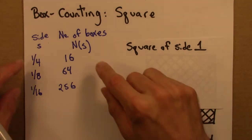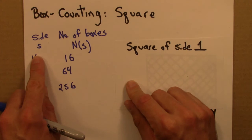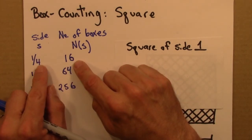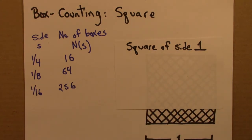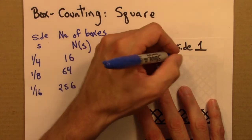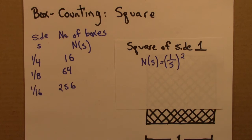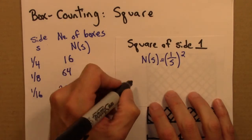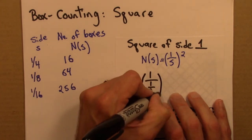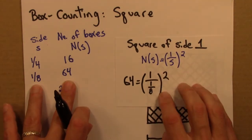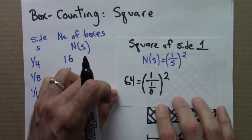So, as with the line, I'd like to look at this data, and then come up with a relationship between N of S, the number of boxes needed to cover the shape, and the side S of the box. So we can see the relationship here. This 4 has to get squared, and then brought upstairs to be 16. 8 squared, 64. 16 squared is 256. And so this is going to have the form N of S is 1 over S squared. And let's check. Let's plug in these numbers just to see. So N of S is 64. 1 over S, well, S is an eighth. Then I square that. So I've just plugged these two numbers in, into that formula. And this is indeed true, because...